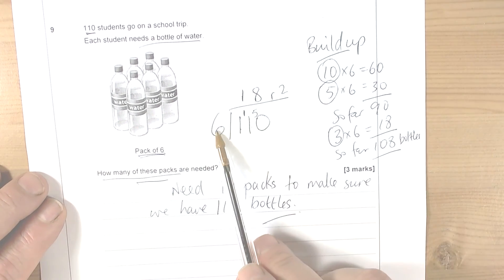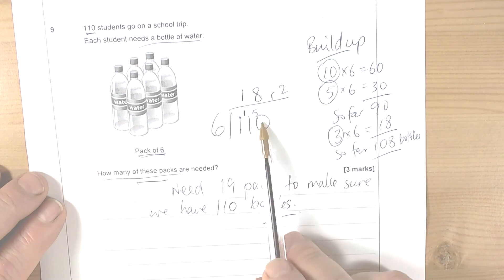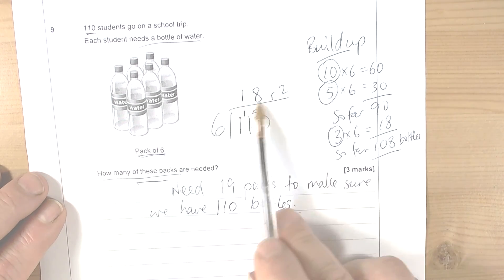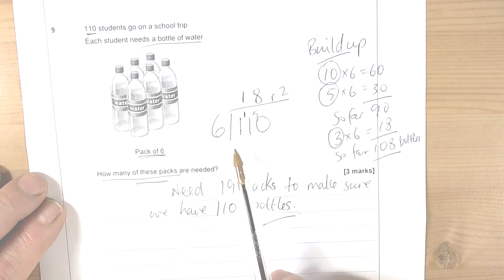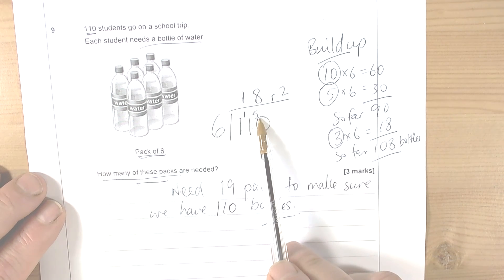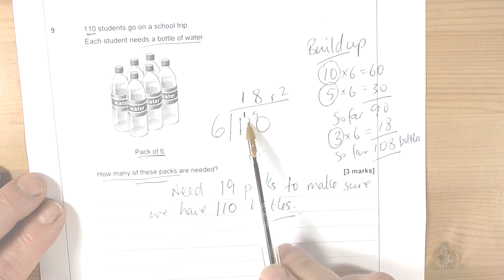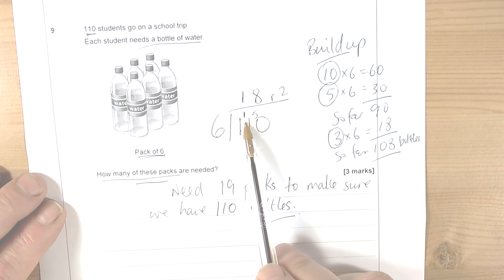But learn your short division, long division method like this, because it can be more efficient and quicker. Once we realize that all we're doing is carrying over the remainders into the next digit so that we can then make a calculation.